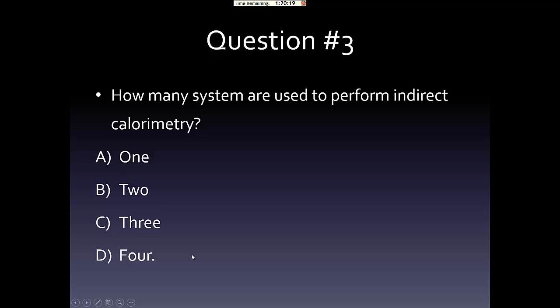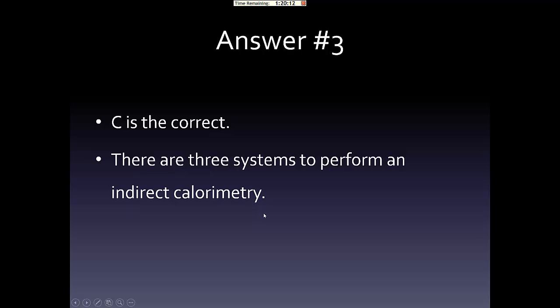Question three: How many systems are used to perform indirect calorimetry? The options are one, two, three, or four. There are three systems used to perform indirect calorimetry. The answer is C.